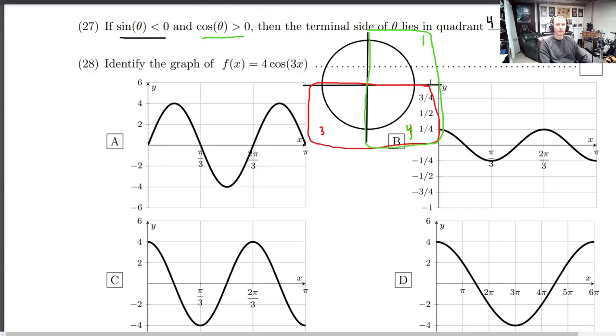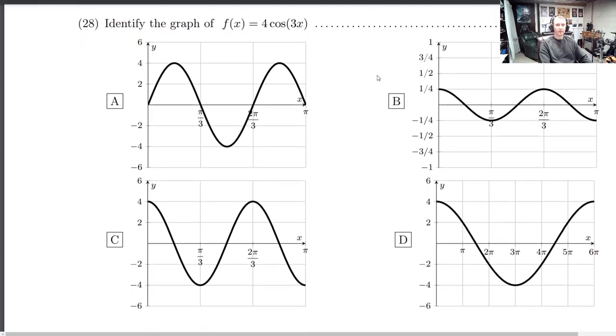Okay. Alright. Next question. Identify the graph of f of x equals 4 cosine of 3x. Okay. First of all,